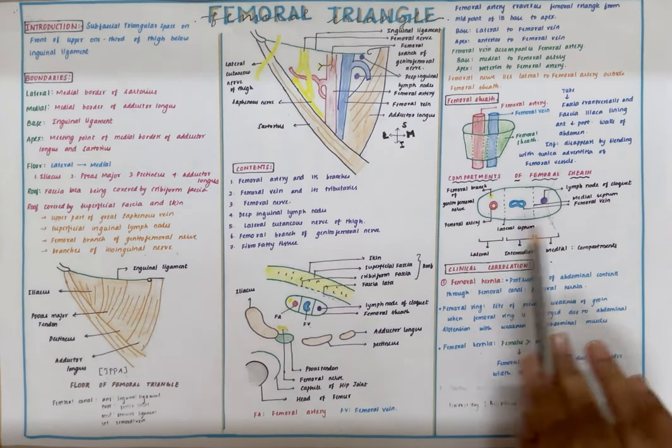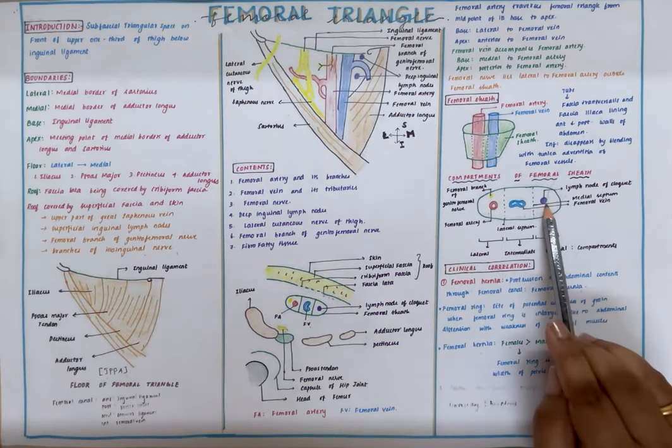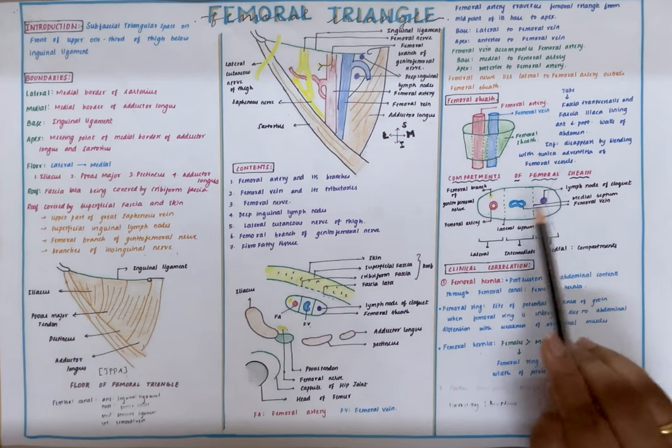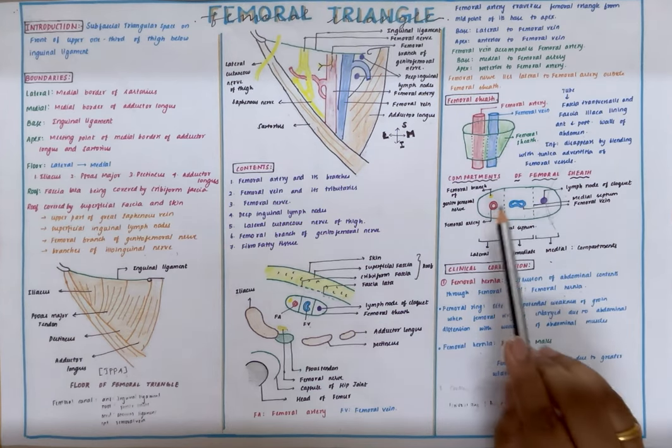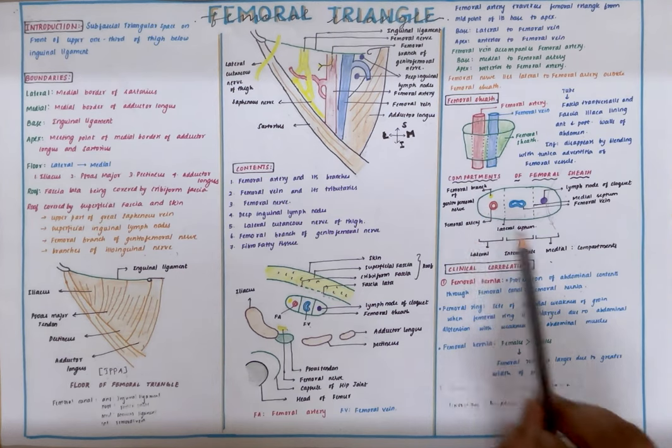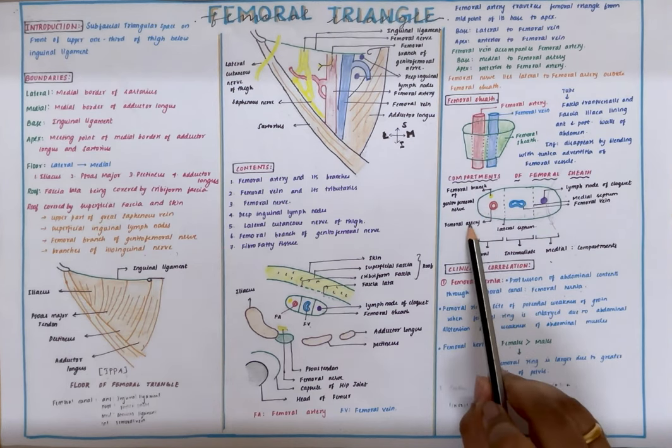So the contents of these compartments are lymph node of Cloquet in the medial compartment, femoral vein in the intermediate compartment, and femoral artery along with the femoral branch of genitofemoral nerve in the lateral most compartment.